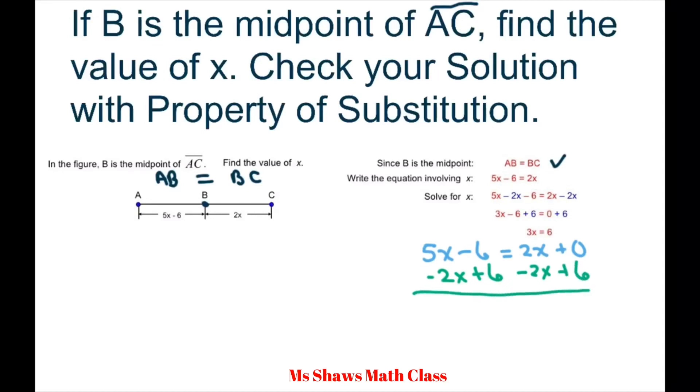So we can save time here. We get 3X plus 0 equals 0 plus 6, or 3X equals 6. Use your division property of equality. Divide both sides by 3 and you get X equals 2.